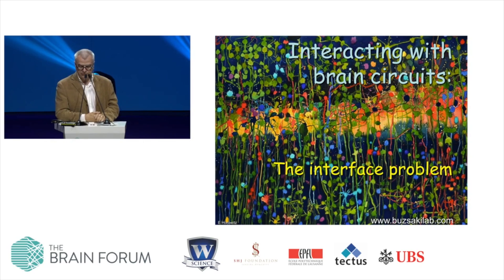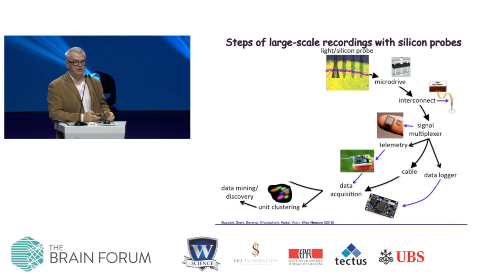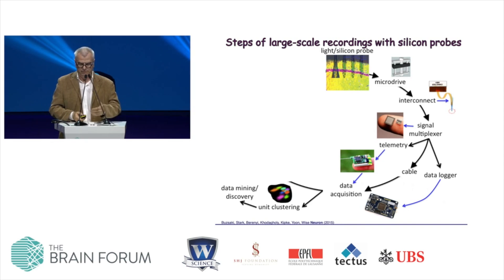There are various ways of doing things — one with light, the other with electricity. The good thing about electricity is that we understand how it works; we know all the theory behind it. In order to be successful, the first thing we have to establish is an interface between the brain and the recording device. There are multiple steps involved: you have to make the device small, put it on the head of the animal, and eventually read out and understand how neurons interact with each other.